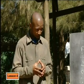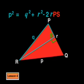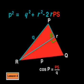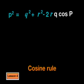We're getting closer to proving the cosine rule. PS is the only part of the equation that still needs to change, and we still need to bring in cos P and Q. In triangle PRS, using the trig ratio for cosine: cos P equals adjacent over hypotenuse, which is PS divided by Q. Multiplying through by Q gives PS equals Q times cos P. Substituting this into the previous equation — replacing PS with Q cos P — gives us the cosine rule.